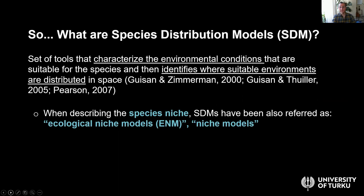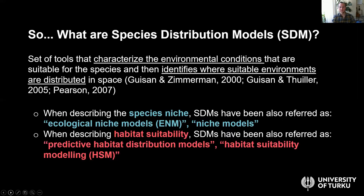Species distribution models have been referred to with many terms. When describing the species niche, they are also called ecological niche models or niche models. When describing habitat suitability, they are called habitat suitability models. These terms differ in emphasis: if we focus only on the environmental space, we might refer to ecological niche modeling; if we focus on the geographical space, we refer to species distribution models. But the underlying idea is the same.